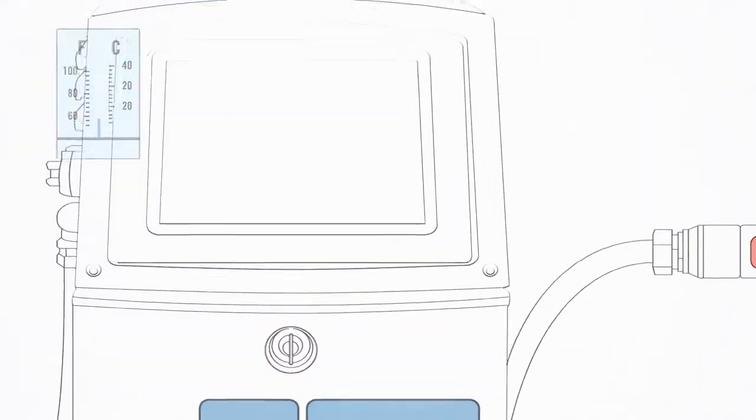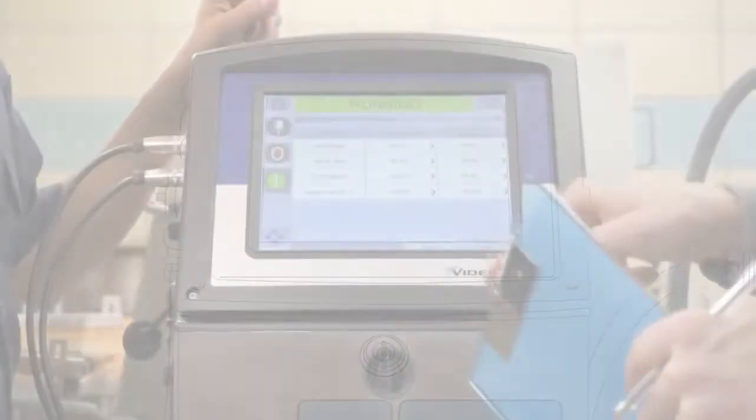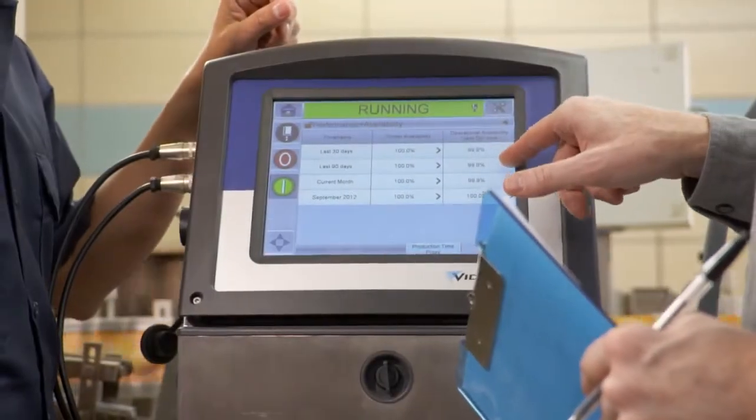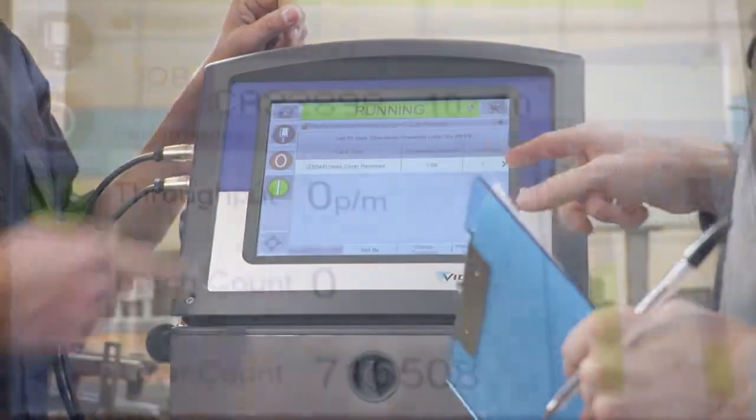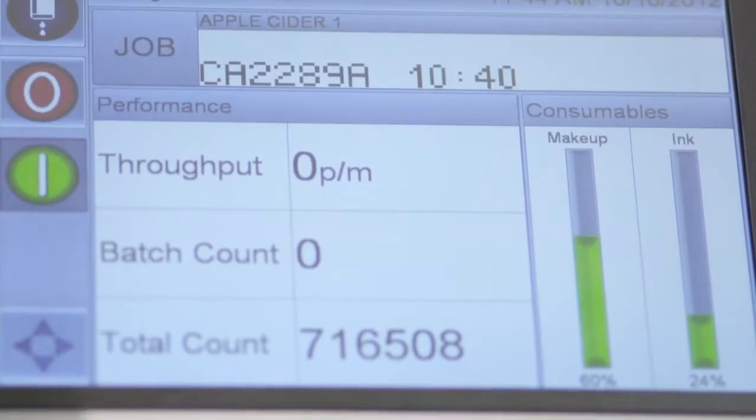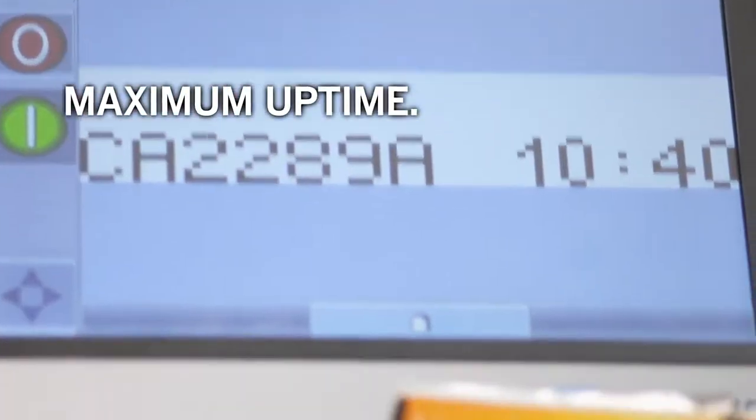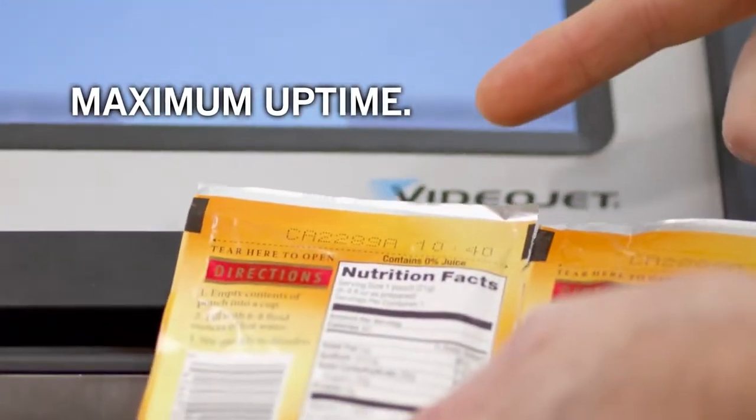To sum it up, dynamic calibration means the printer makes printhead temperature control, automatic drop control, and time of flight velocity control work together to ensure maximum uptime and great print quality. Only from VideoJet.